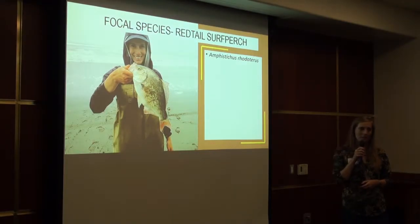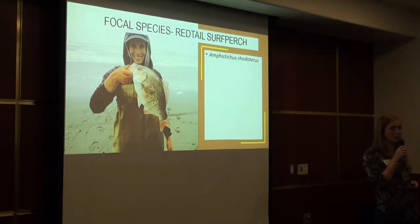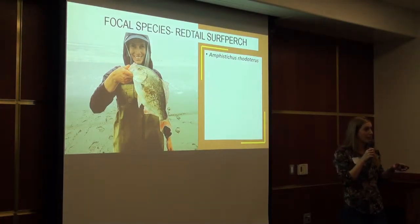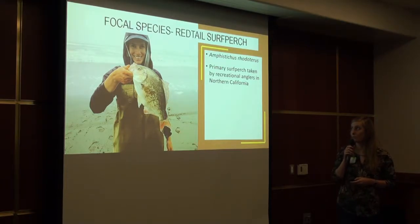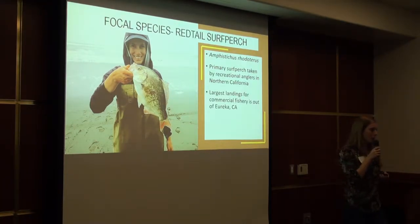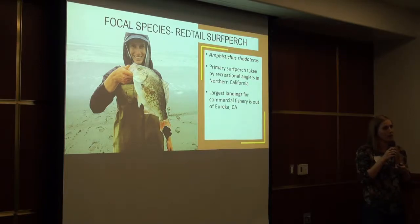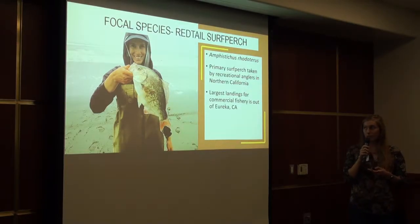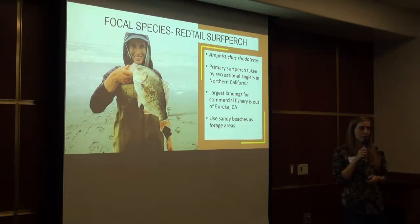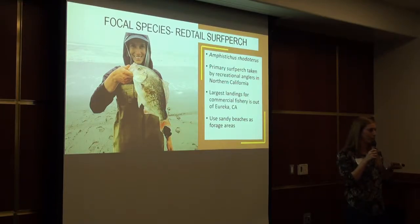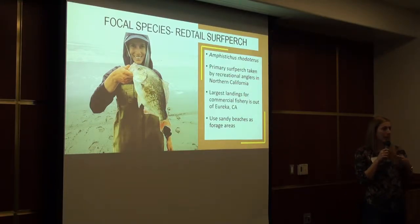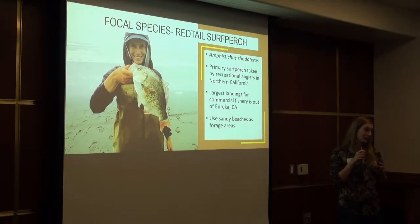Red-tailed surf perch — scientific name Amphysticus rhodoterus — is the primary surf perch taken by recreational anglers in the North Coast region. There's also a small commercial fishery for this species, with the largest landings coming out of the Port of Eureka. These fish utilize the surf zone next to sandy beaches as forage areas, coming up close to shore to feed on different prey sources. After my talk, Helen Mulligan will give a talk on the diet of these fish.